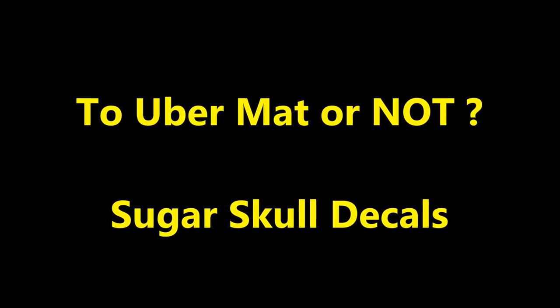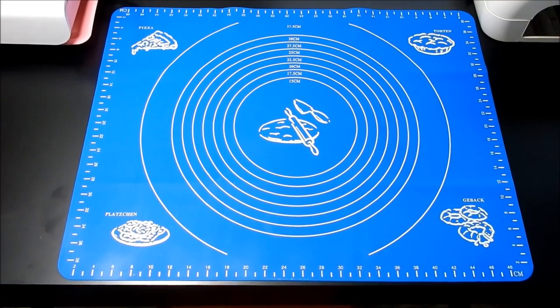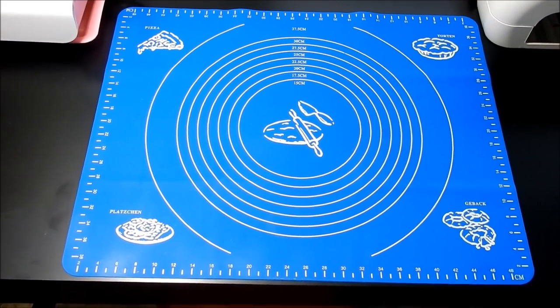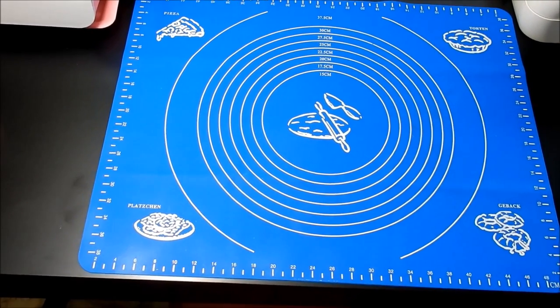Seven, six, five, four, three, two, one. In this video I'm coming at you to share what I use as an alternative to the uber chic mat. It's just a pastry mat that I found on eBay.